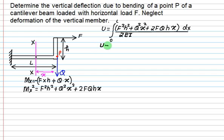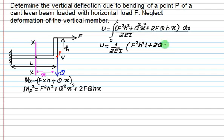So U equals 1 upon 2EI times the integral, with 1/2EI as a common factor. The terms are: F squared times X squared multiplied by L, plus 2 times Q times L cubed by 3, plus 2 times F times H times L squared by 2.